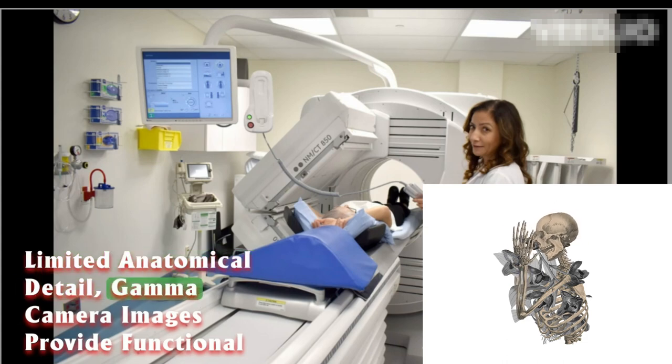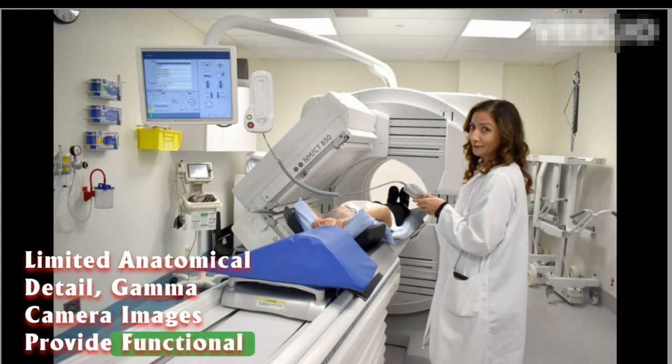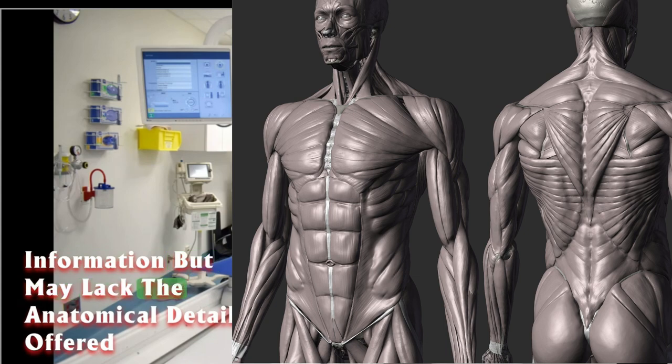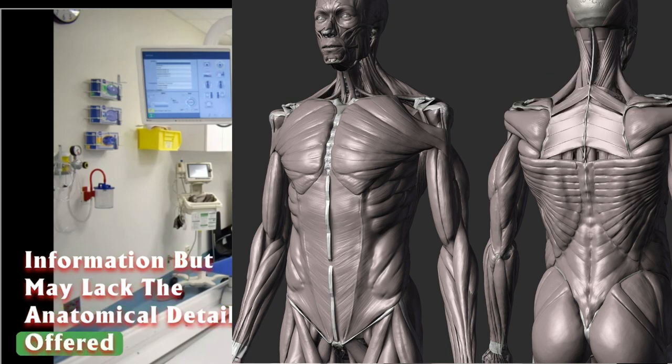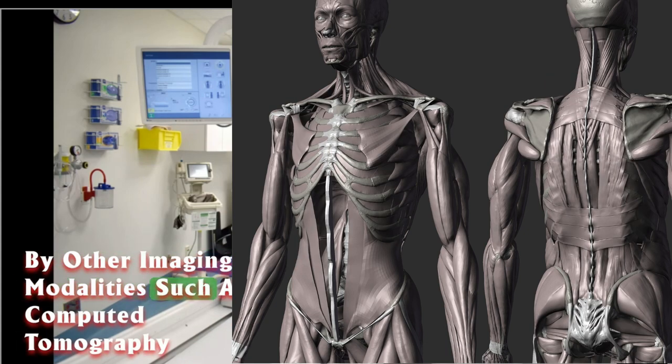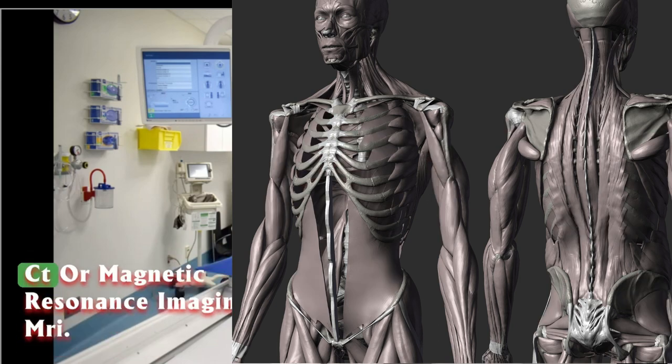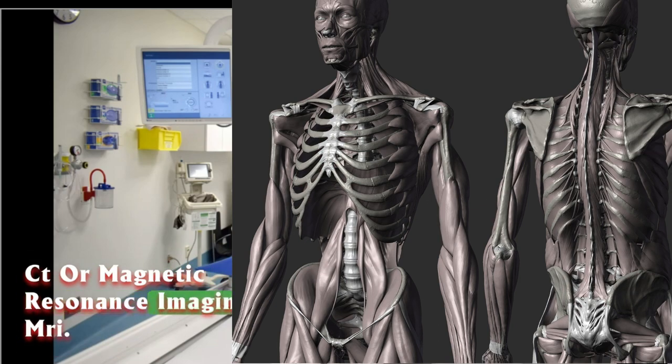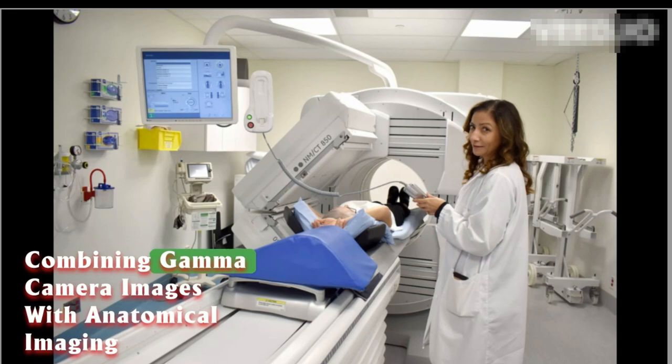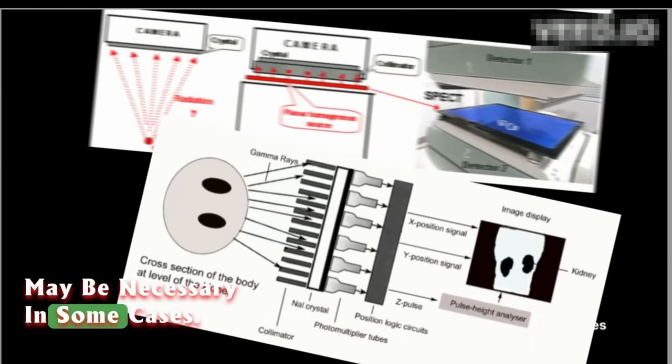Limited anatomical detail: Gamma camera images provide functional information but may lack the anatomical detail offered by other imaging modalities such as computed tomography (CT) or magnetic resonance imaging (MRI). Combining gamma camera images with anatomical imaging may be necessary in some cases.